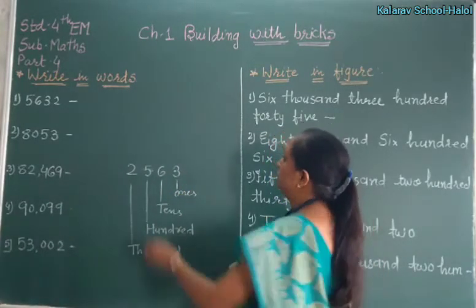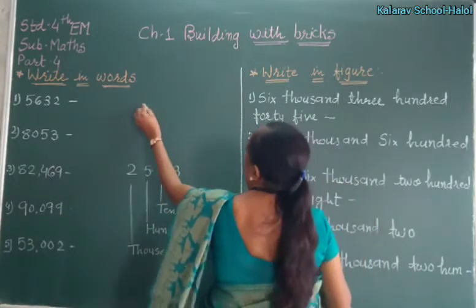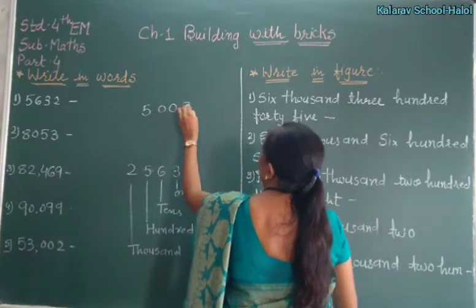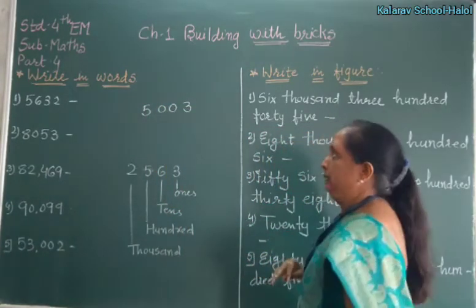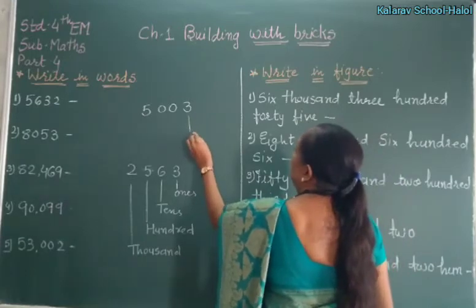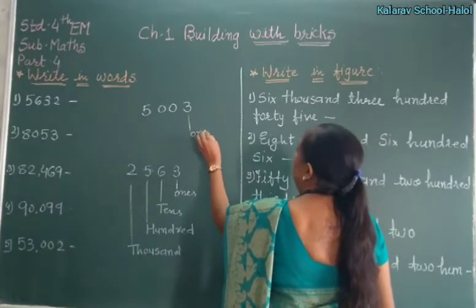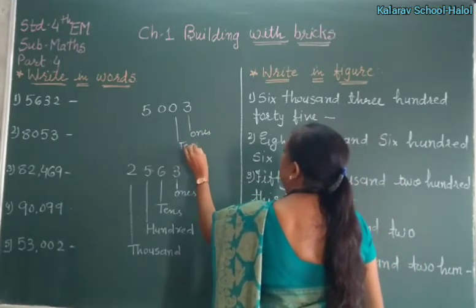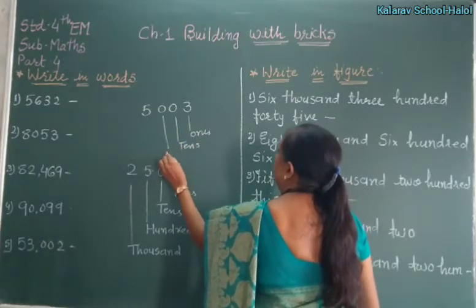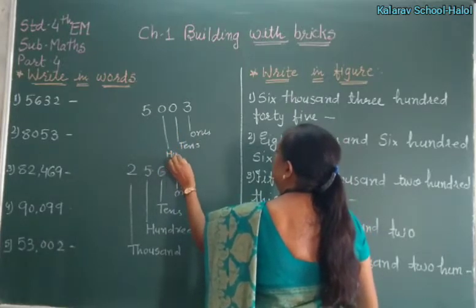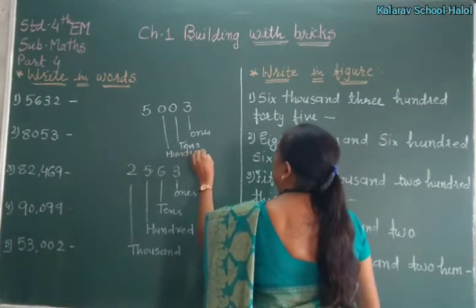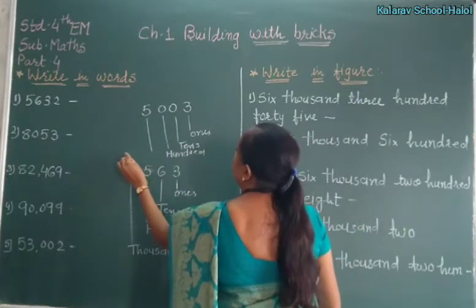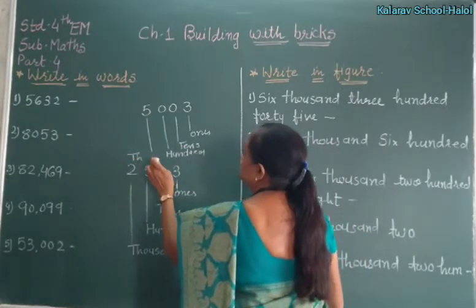If any number is like 5, 0, 0, 3 — now see, 3 is on ones. Tens has 0, hundreds has 0, and 5 is on thousands. Right?